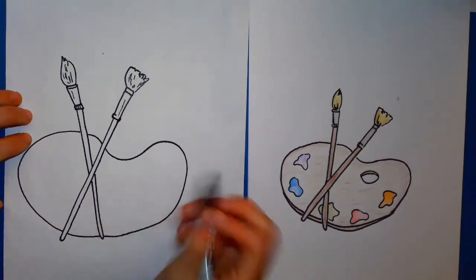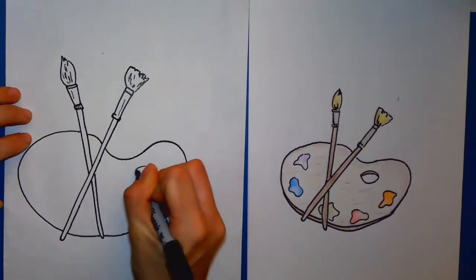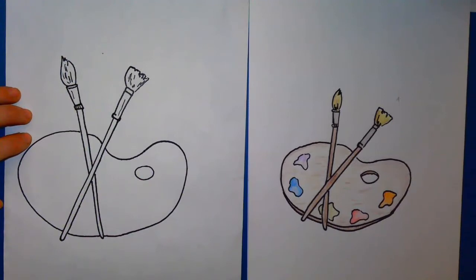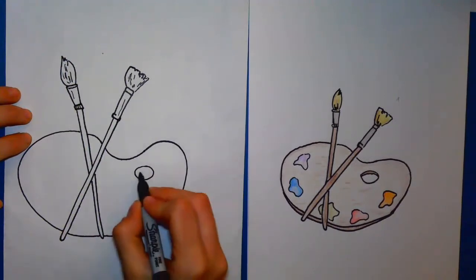And then we're going to add the thumb hole. After you draw that oval, add a curved line inside.